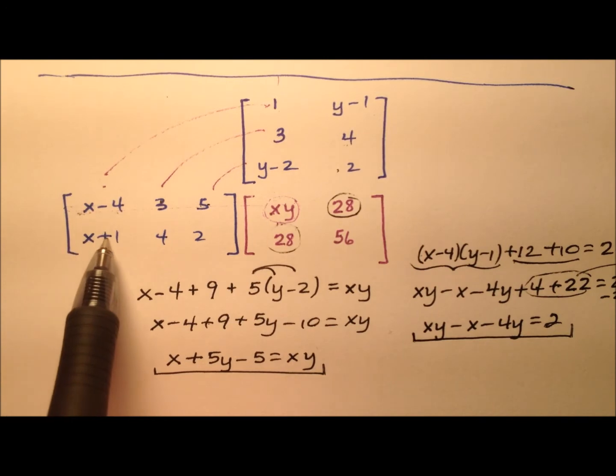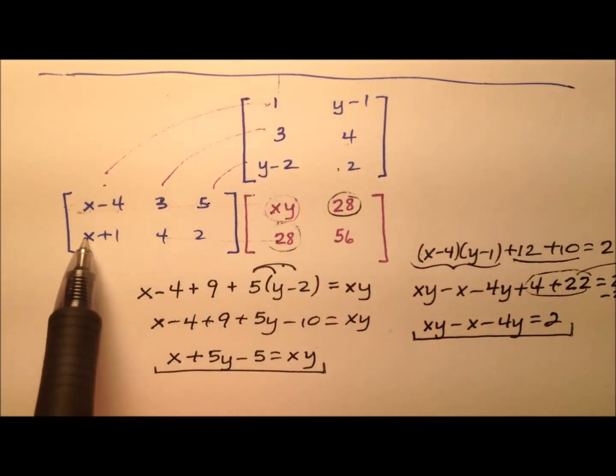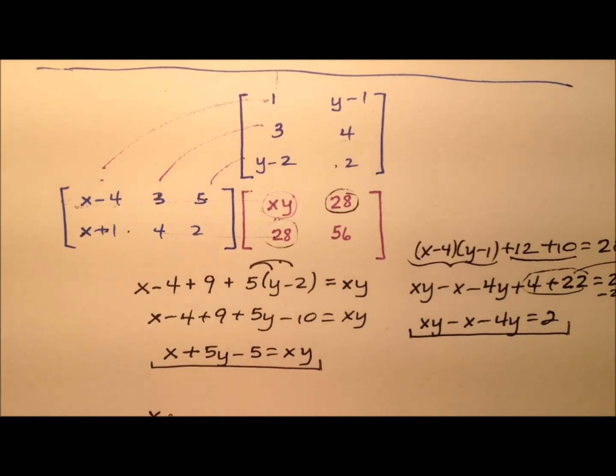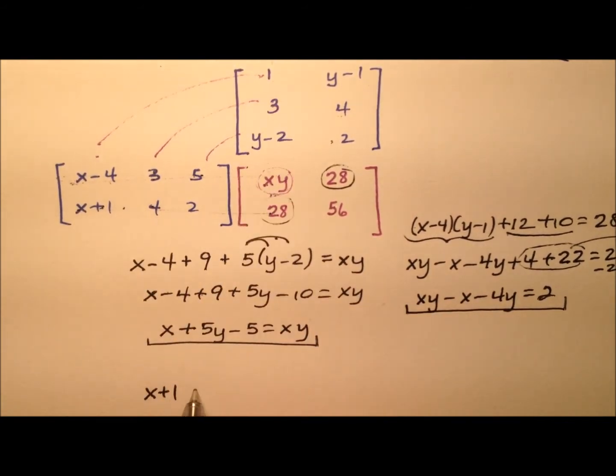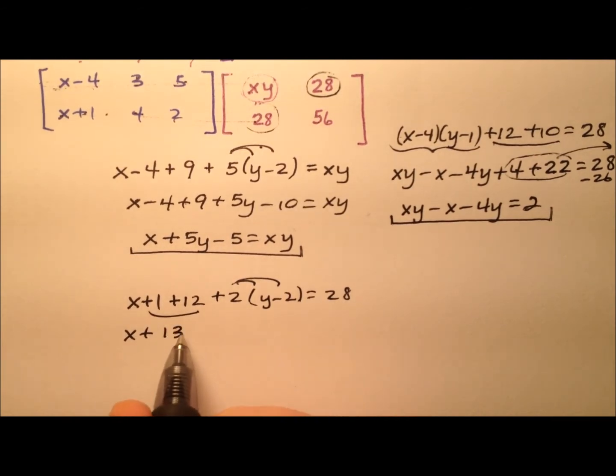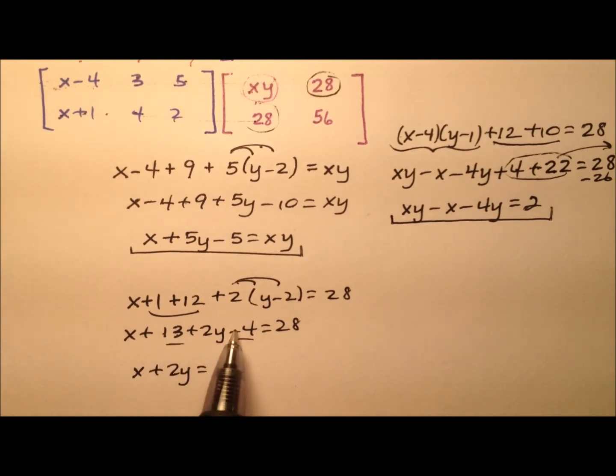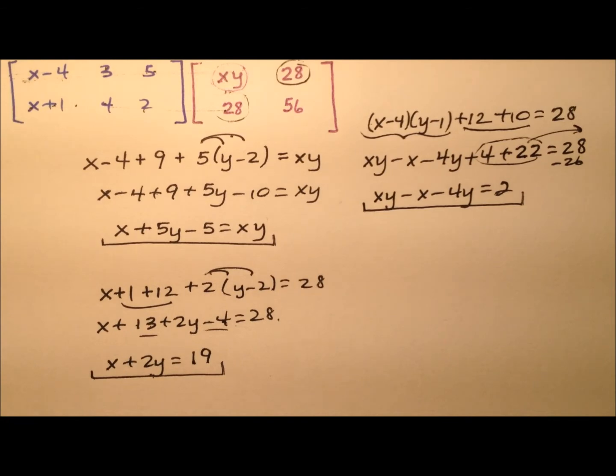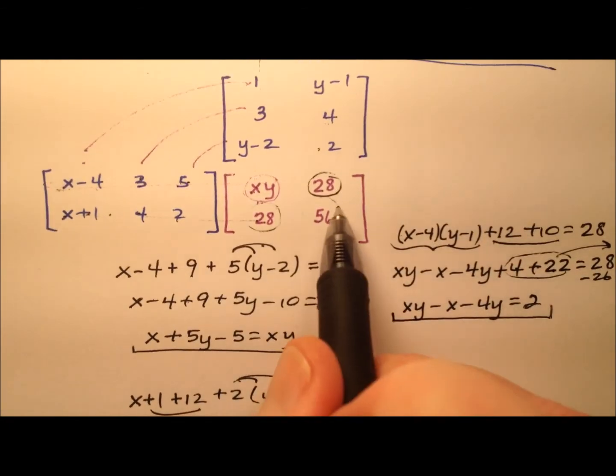Let's go ahead and look at this 28. So we're going to come across this row and down this column, so (x+1) times 1 is going to be x+1, and then we have 4 times 3 is 12, and then 2 times (y-2), and that equals the 28 entry right there. So it looks like when I distribute I'll have x+13+2y-4 equals 28. Of course we can put those together, so x+2y equals, and 13-4 is 9, when I move it over it'll be a -9, so that 28-9 is 19. So a third important equation, and let's just go ahead and figure out what this last one is going to be as well.